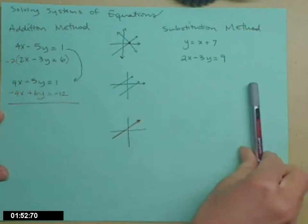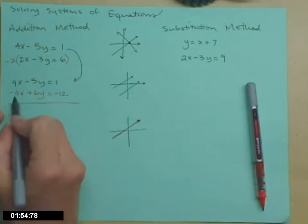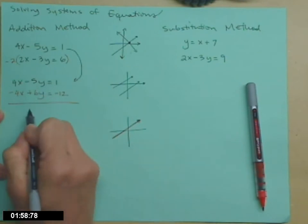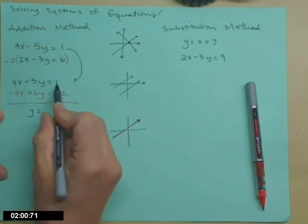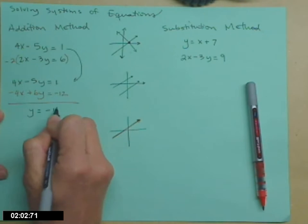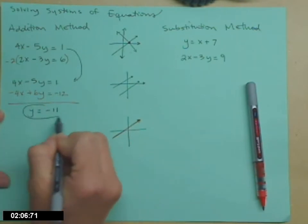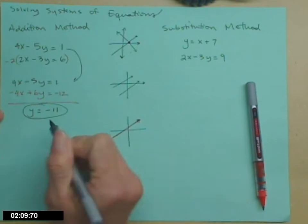And now I'm going to add those two equations together. 4x minus 4x is 0. Negative 5y plus 6y is just y. And then 1 minus 12 is negative 11. So the y value where these two lines intersect is negative 11.